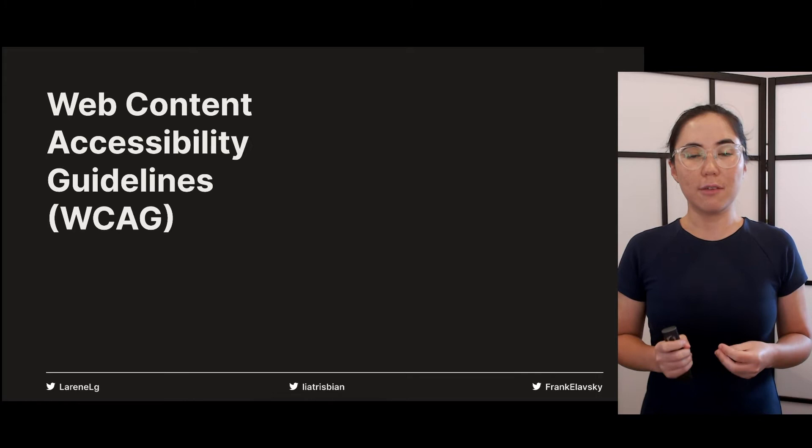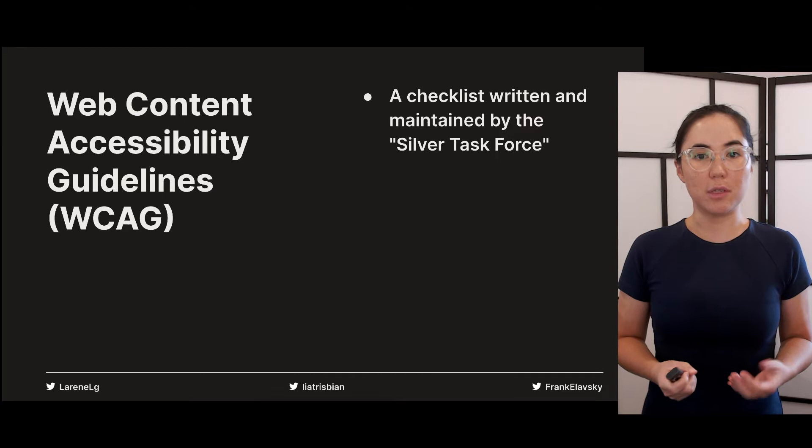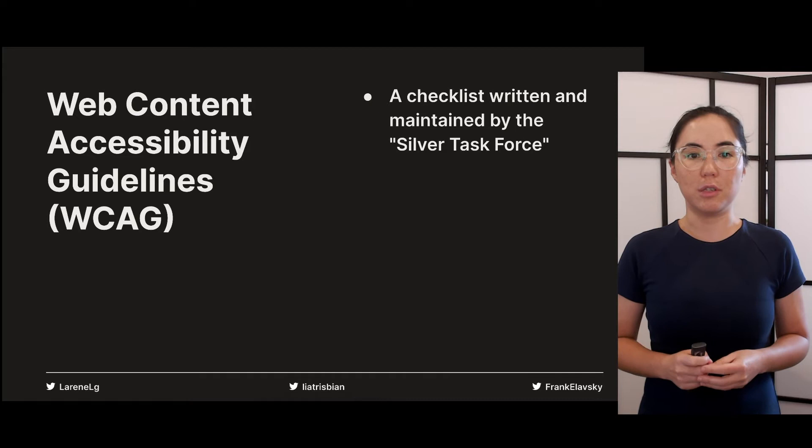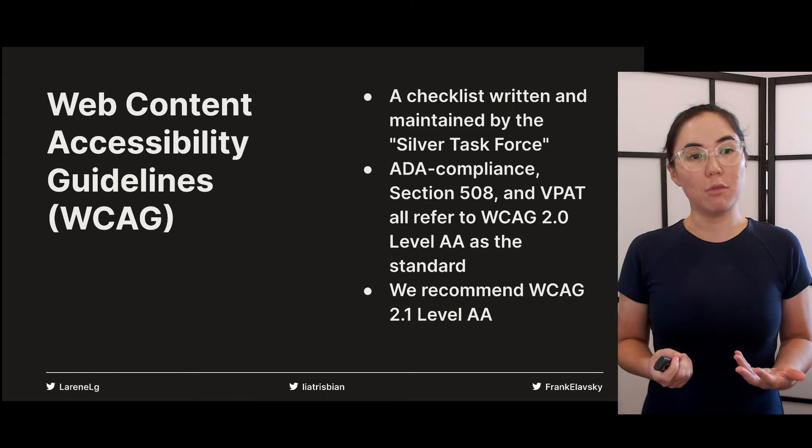The next thing you need to learn about is the Web Content Accessibility Guidelines, or WCAG for short. Just like physical buildings have a bunch of disability standards, the WCAG is a set of rules that help check if websites are accessible — a checklist of sorts. It was created and maintained by a group of global accessibility and web experts now called the Silver Task Force. If you've ever heard of ADA compliance, Section 508, or VPAT, they all require you to meet the rules outlined in WCAG.